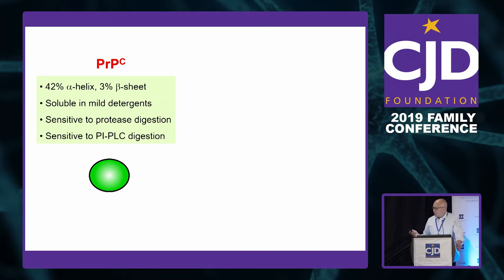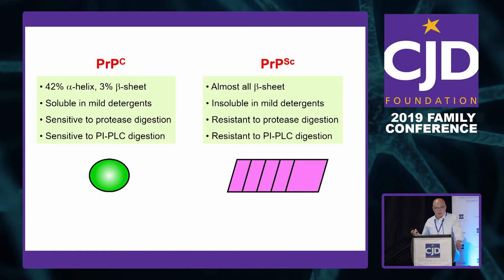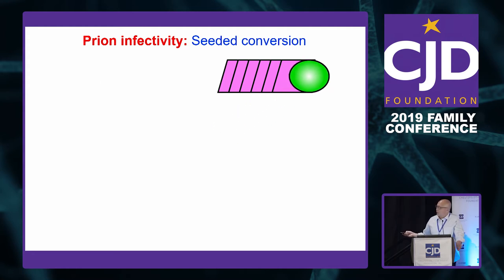During the disease, some of the molecules change their shape — what we call PRP Scrapie. Because it has changed shape, it gains new properties. You've heard about how they like to clump together — they form what we call aggregates. They develop resistance to protein digestion. And importantly, these clumps can recruit normal proteins and force them to change shape. That's what we call the seeded conversion of prion infectivity, and we call all these aggregates prions.